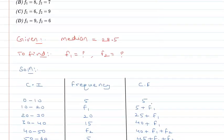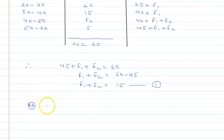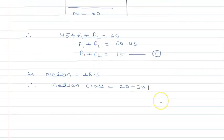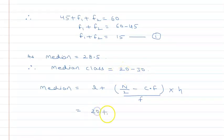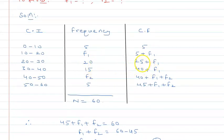Now, looking at the median 28.5, the median class will be 20 to 30. Median is given by the formula: L plus (N by 2 minus CF) divided by F, into H, where L is the lower limit of the median class. So the median class is 20 to 30, lower limit is 20. N is 60, so N by 2 is 30. CF is 5 plus F1, which is 25 plus F1.